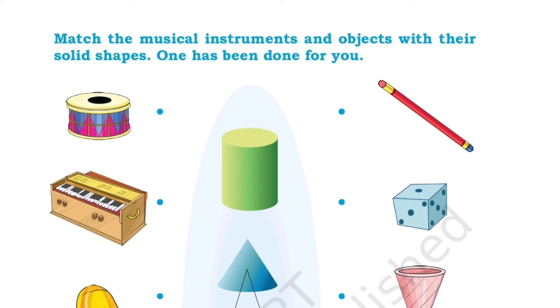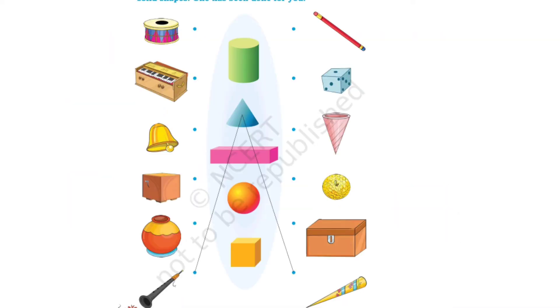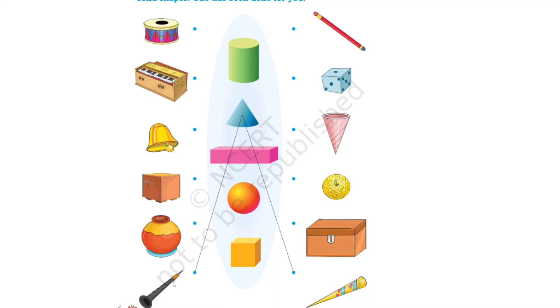Match the musical instruments and objects with their solid shapes — one has been done for you. We have the shapes of cylinder, cone, cuboid, sphere and cube. For cylinder, we match drum and pencil — we all know drum is in a cylinder shape and pencil is also in a cylinder shape.